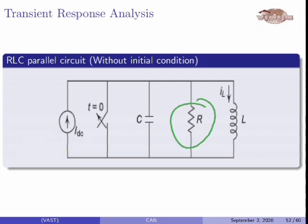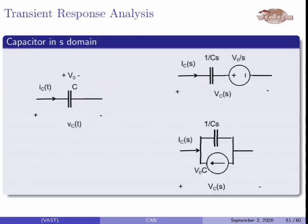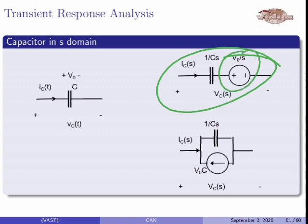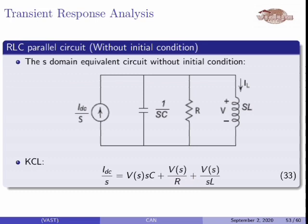Then resistance remains R in the S-domain — time domain to S-domain. The capacitor becomes 1/CS in series with a voltage source. The inductor becomes SL — that is without initial conditions, so no initial condition voltage source. The S-domain equivalent circuit without initial conditions has: current source IDC/S, capacitor impedance 1/CS, resistance R, and inductor impedance SL.